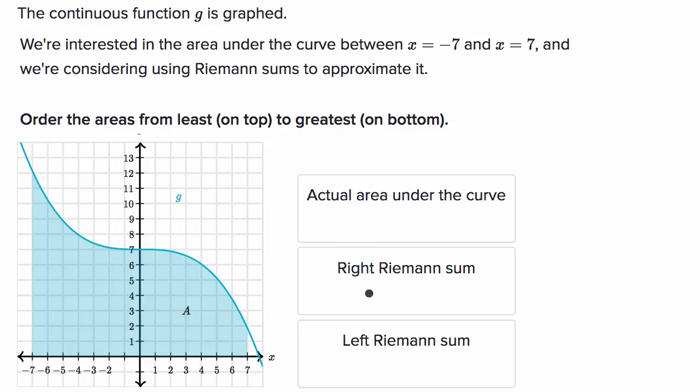So this is a screenshot from a Khan Academy exercise where you would be expected to actually click and drag these around, but it's just a screenshot. So what I'm gonna do instead of dragging them around, I'm just gonna write numbers ordering them from least to greatest, where one would be the least and then three would be the greatest.